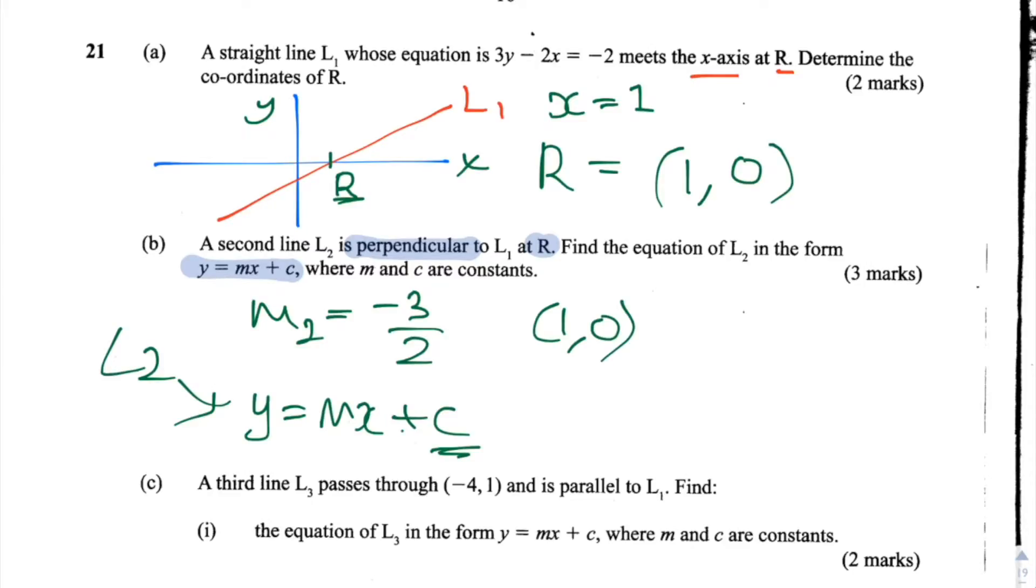So what we get is y which is 0, so 0 equals minus 3 over 2 times x which is 1 plus c. Let's move the minus 3 over 2 to the other side. So we get c equals 3 over 2. So the y-axis intercept for the line L2, or the c constant, is 3 over 2.